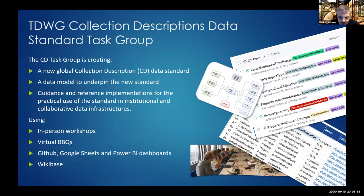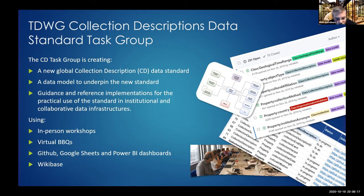The task group was set up last year within the collection descriptions interest group, with the remit to create a new data standard for describing both digitized and undigitized natural science collections, along with a data model, guidance, and reference implementations. We've been trying out new approaches to make this a more inclusive, community-driven process.